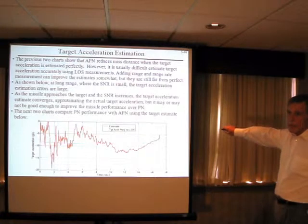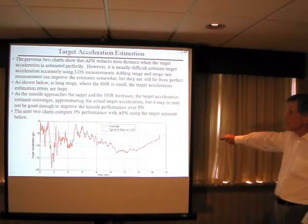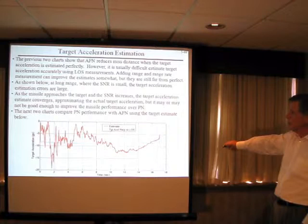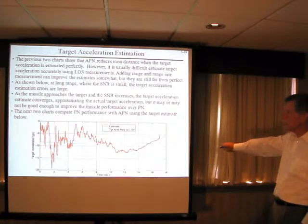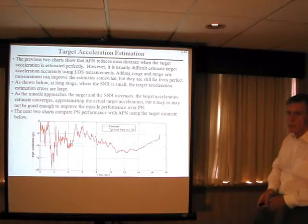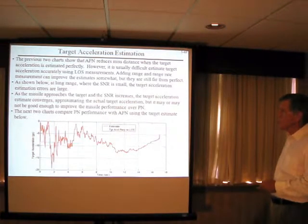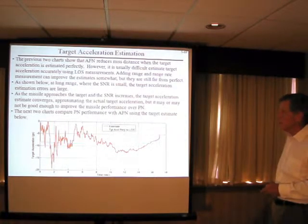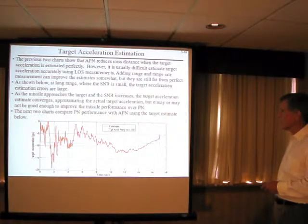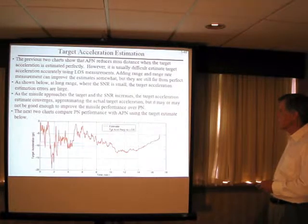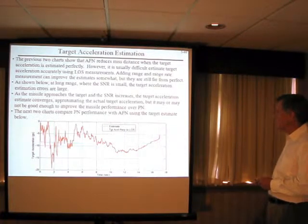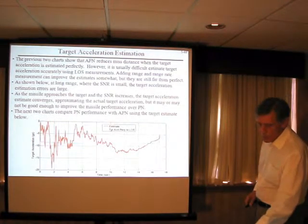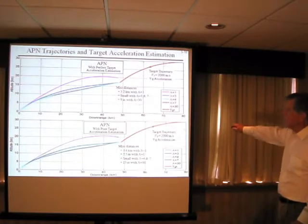The fact is we cannot perfectly estimate target acceleration. The target acceleration estimate might look something like this — this is our 9g target acceleration seen on the earlier chart. The estimate early on is likely to be very bad because of a low signal-to-noise ratio in the missile seeker. As the signal-to-noise ratio increases, we may get a better estimate of target acceleration — it could look something like this. At the end, you might have a much smaller error, but there's still an error. Now we're going to see what this error does to our Augmented Proportional Navigation.